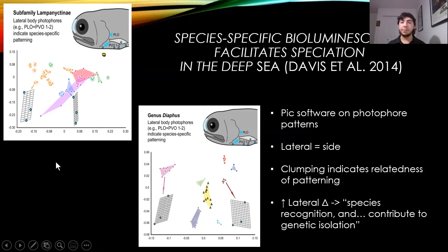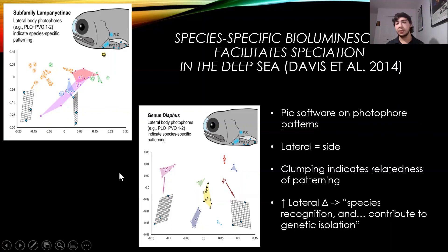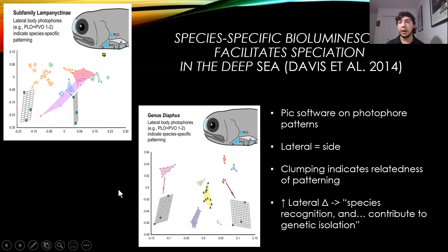On the figures, clumping indicates how related the photophore patterns are to each other, with color representing different groups within the subfamily or genus. Based on these images, there is clear correlation between photophore patterns within these groups. However, when they performed the same analysis for ventral photophores, they did not find significant clumping within the same species groups. This indicates that lateral photophore pattern changes contribute to recognition and genetic isolation — individuals with photophores in different locations across species will not reproduce, driving speciation.